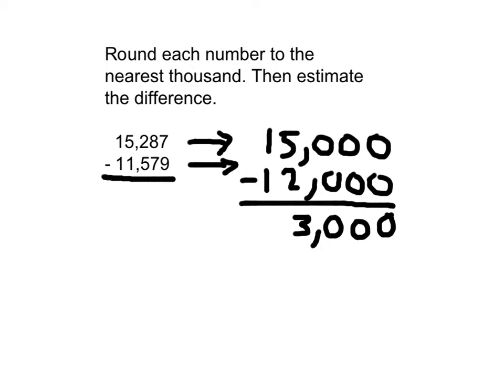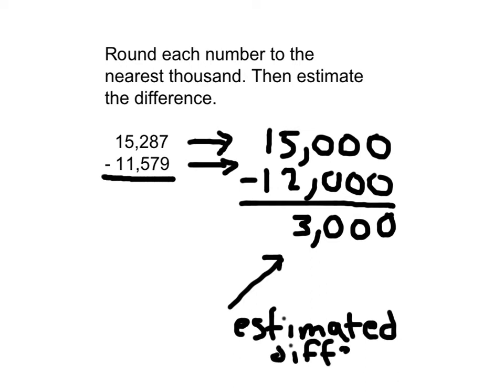So our estimated difference is 3,000. That's our estimated difference. Please do not write this estimated difference where the exact answer would go. Some students will want to copy this and say, okay, well that's the answer. But this right here would be where the exact answer would go. So 3,000 is the estimated answer for our problem.